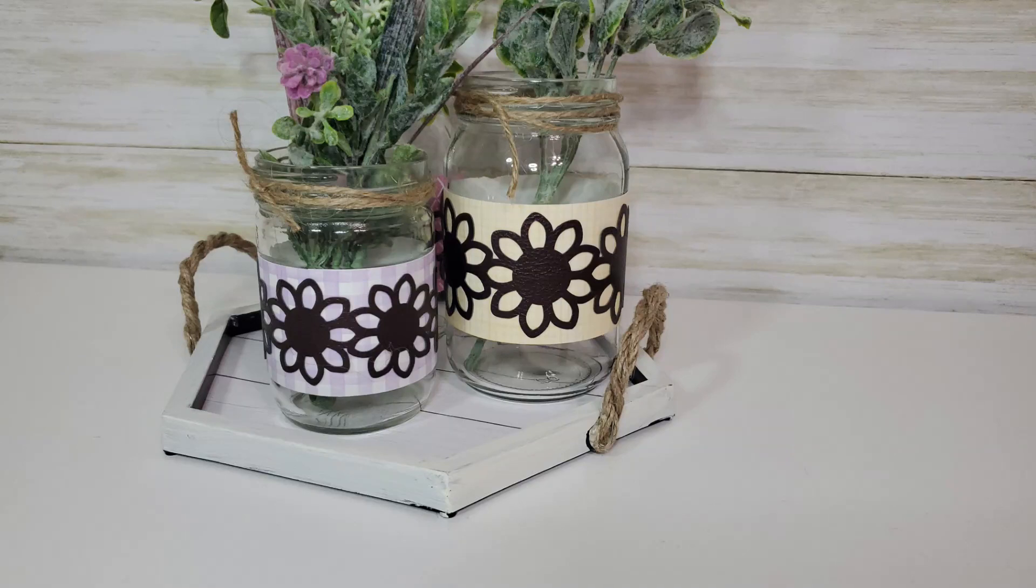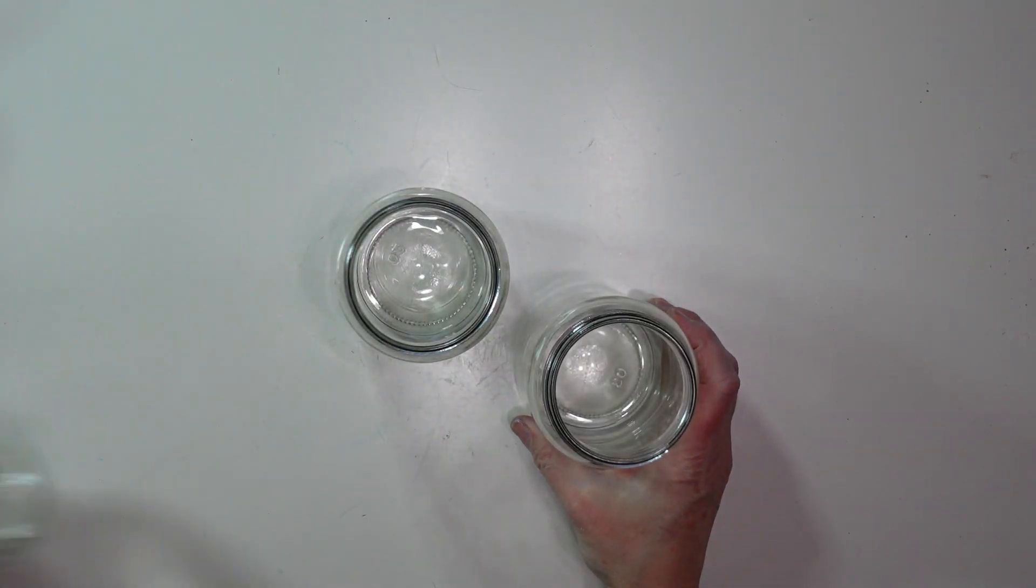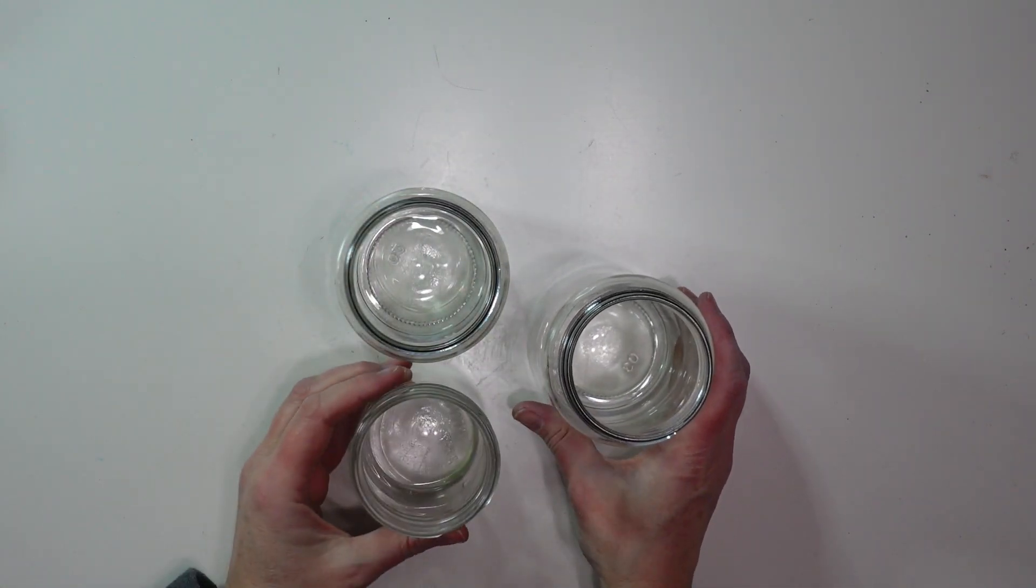In this next project I will be using the Cricut to add faux leather floral accents to this spring centerpiece. For my vases I am just using some jars that I had around the house, a couple of different sizes.